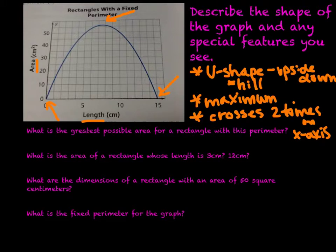What is the greatest possible area for a rectangle with this perimeter? For this situation, I'm looking at that maximum value. I have to estimate it a little bit. I'm going to be taking this information and moving over to my y-axis and seeing where it hits. It's a little above my 55 line. So I'm going to say my greatest possible area is maybe 56 centimeters squared.